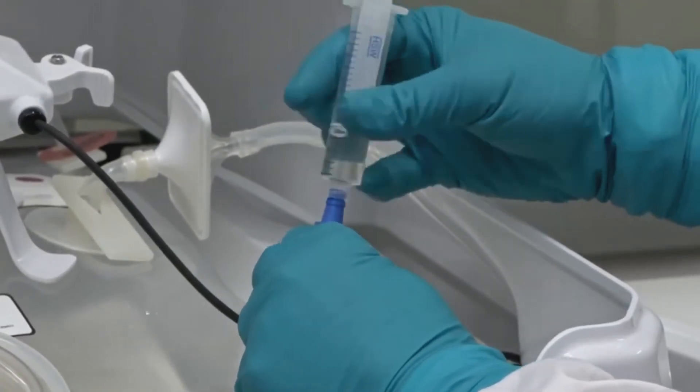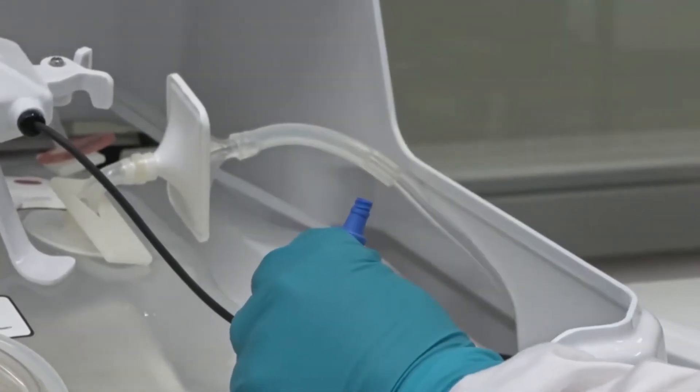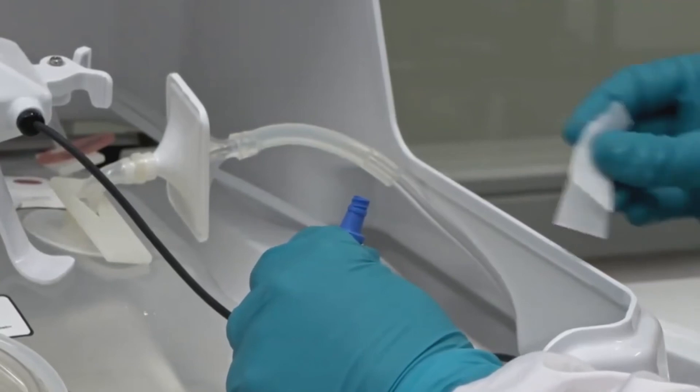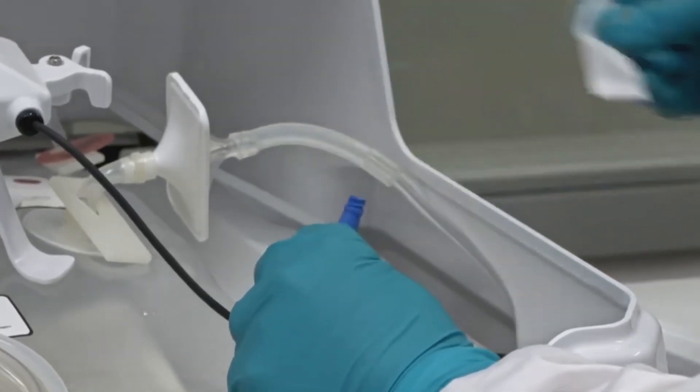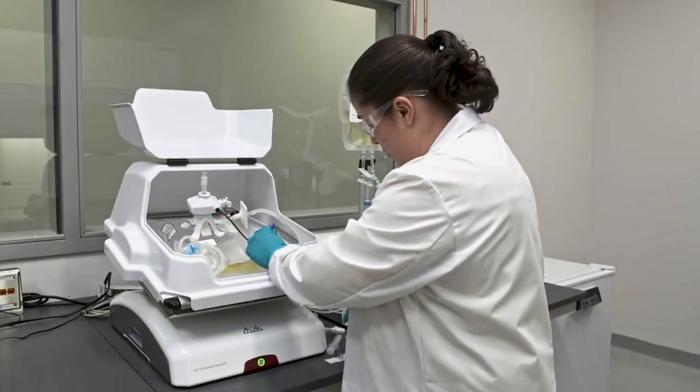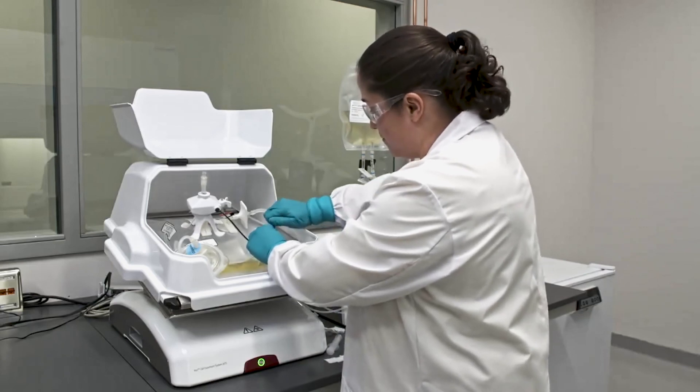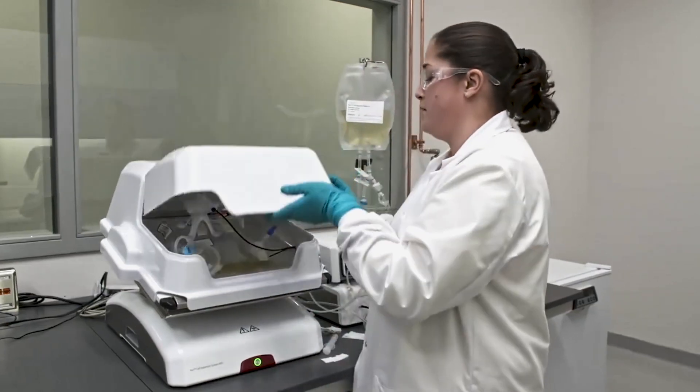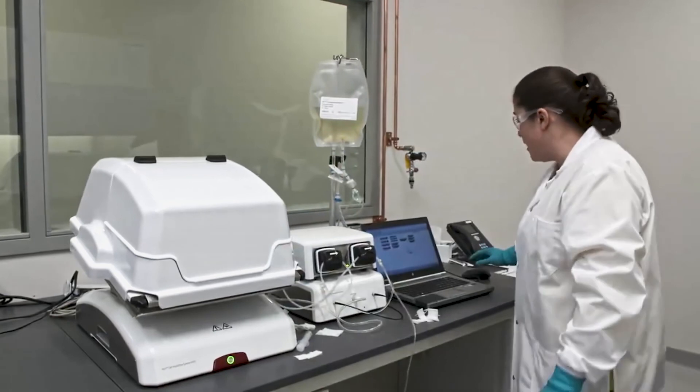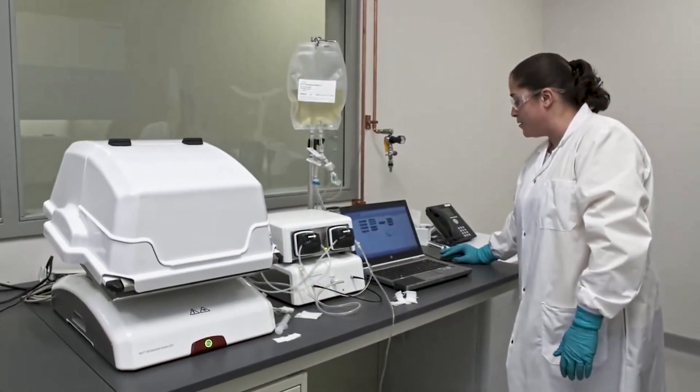Now remove the syringe, wipe the top of the clave port once more and put the cap back on. Close the cover and then click the pause button on sampling to continue rocking.